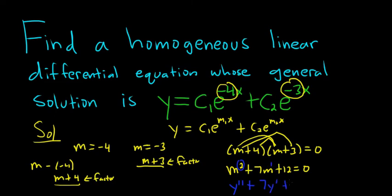And be super careful here. Here it's 12, so we get 12y, and that's equal to 0. And so that would be the differential equation that has this as its general solution. I hope that made sense.